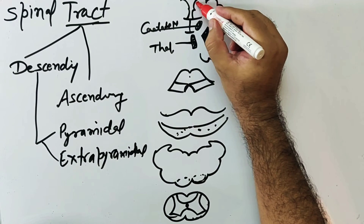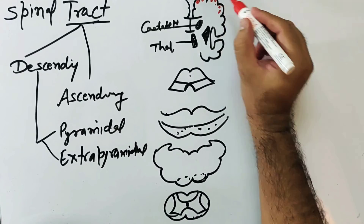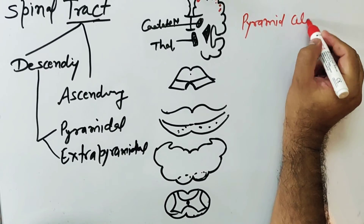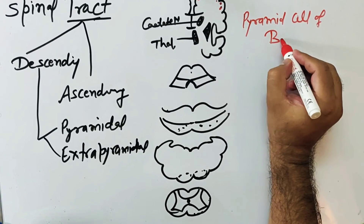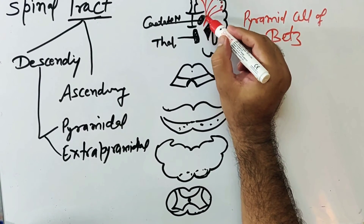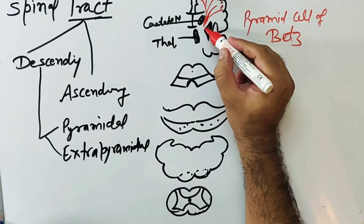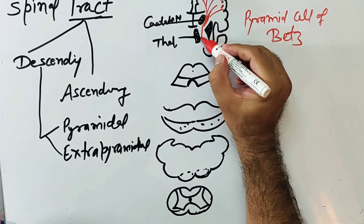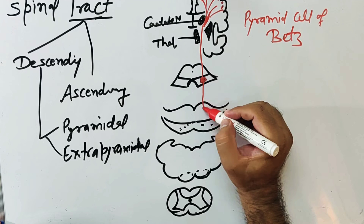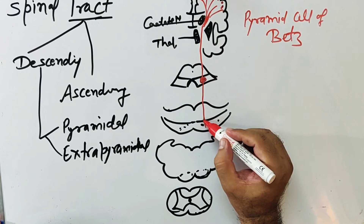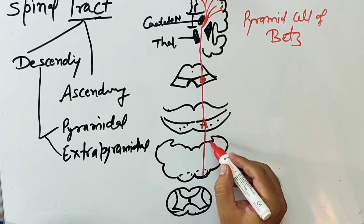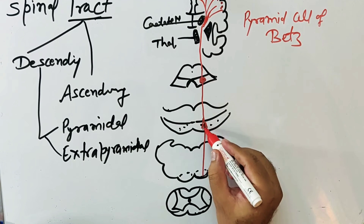Here are the pyramidal cells. The fiber passes through the corona radiata, then through the posterior limb of the internal capsule, then through the genu, and from here it passes through the middle three-fifths. From here it passes through the basilar part of the pons.